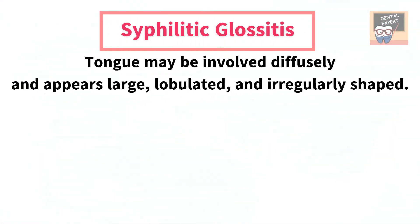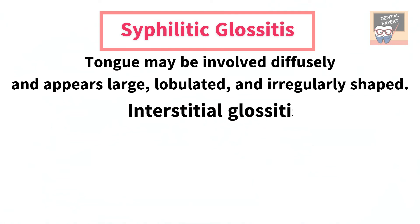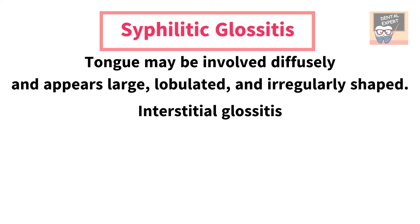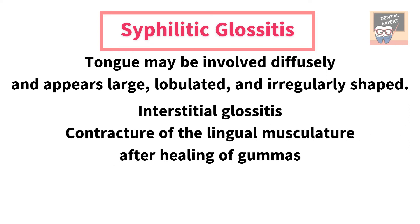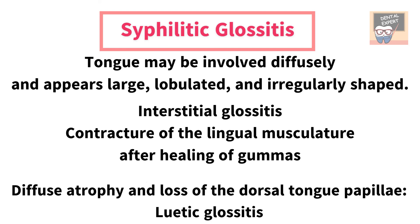In tertiary syphilis, the tongue may be involved diffusely and appear large, lobulated, and irregularly shaped. This lobulated pattern is termed interstitial glossitis and is thought to be the result of contracture of the lingual musculature after healing of gummas. Diffuse atrophy and loss of the dorsal tongue papillae produce a condition called leuetic glossitis.